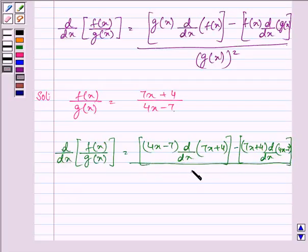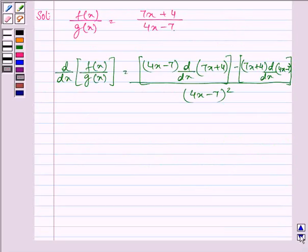Divided by gx the whole square. Right? Let us simplify it further.